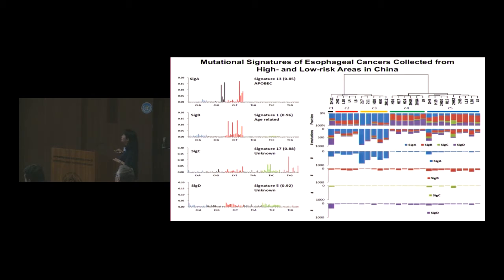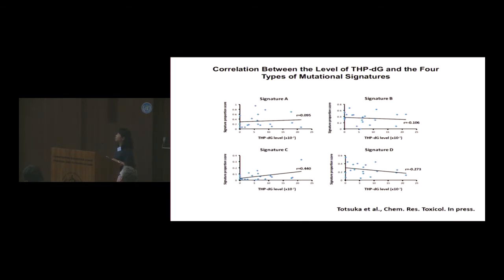This shows the contribution of each signature in individual samples. Unfortunately, we cannot see clear separation between the high-risk and low-risk areas by signature alone. However, when we analyzed the correlation between the levels of THP-dG adduct and the four mutational signatures, a weak correlation between the THP-dG level and Signature C can be observed.